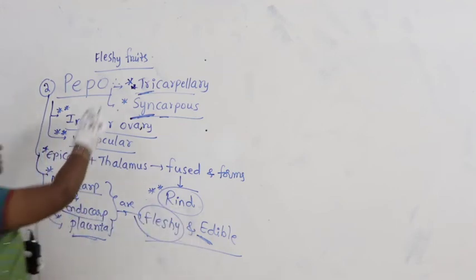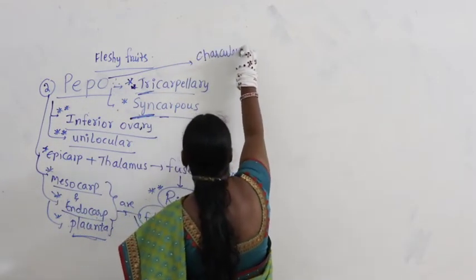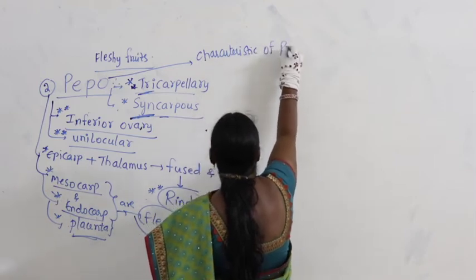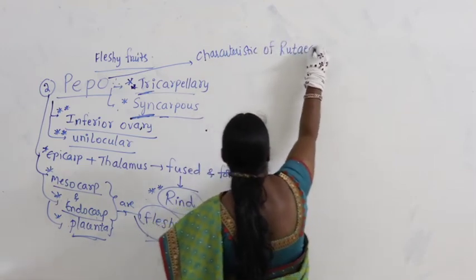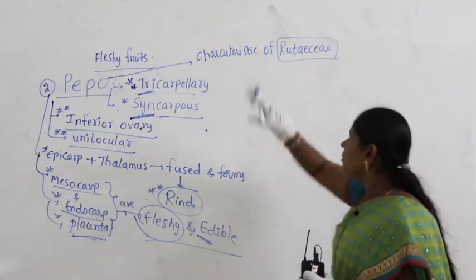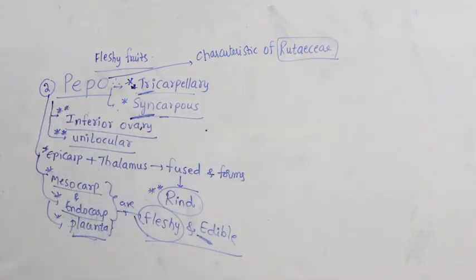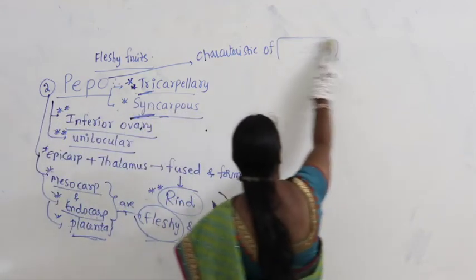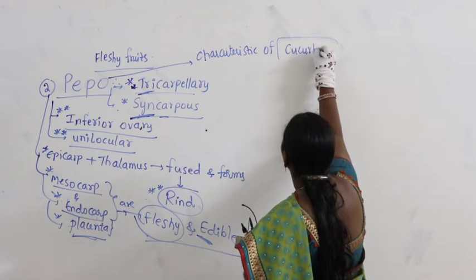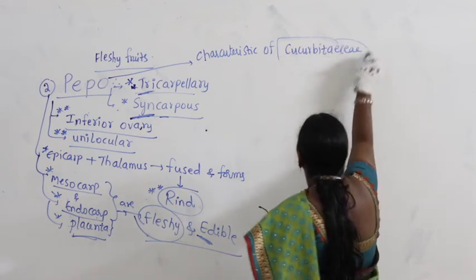Pepo is a characteristic feature of the family Cucurbitaceae. Sometimes you will get the question — which family? The answer is Cucurbitaceae.